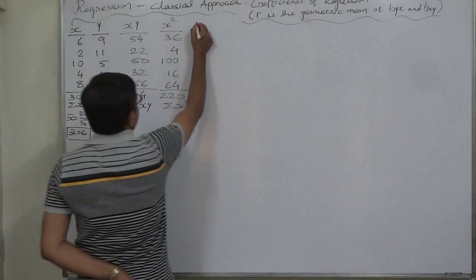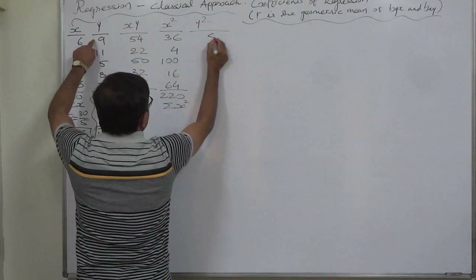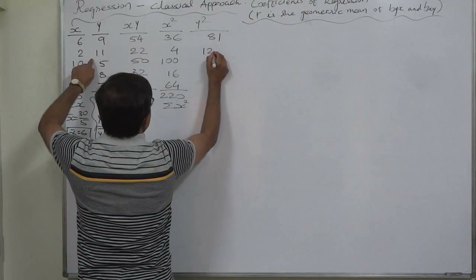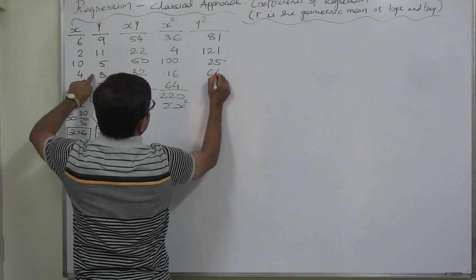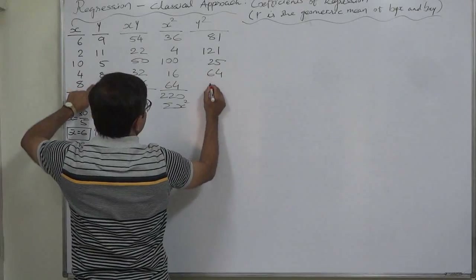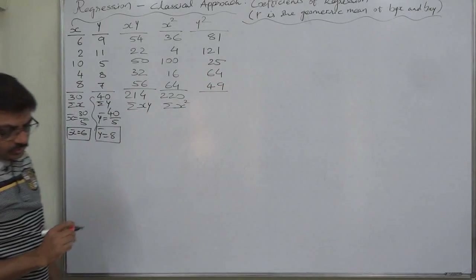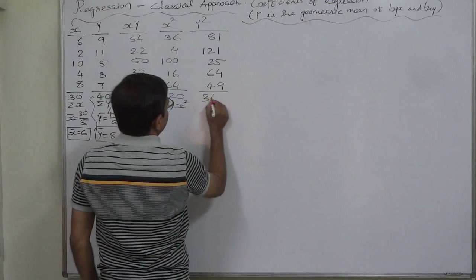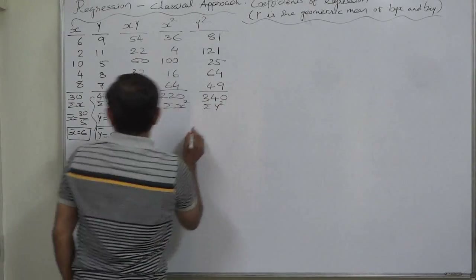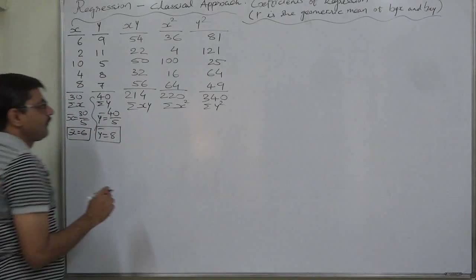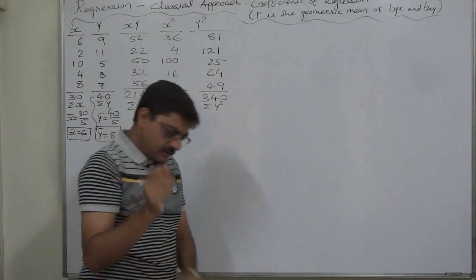Now for y squared: 9²=81, 11²=121, 5²=25, 8²=64, 7²=49, and the total comes to 340, so sigma y squared is 340. We now have all five summations: sigma x=30, sigma y=40, sigma xy=214, sigma x²=220, and sigma y²=340, so we can easily calculate all three coefficients.